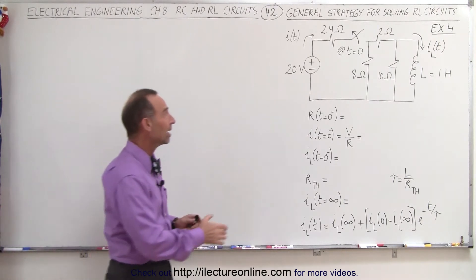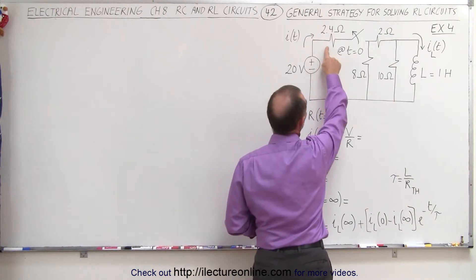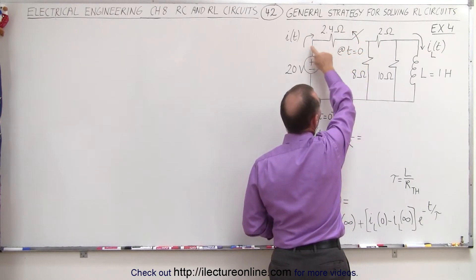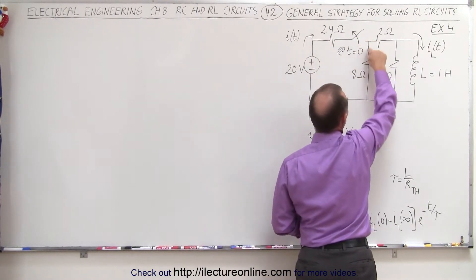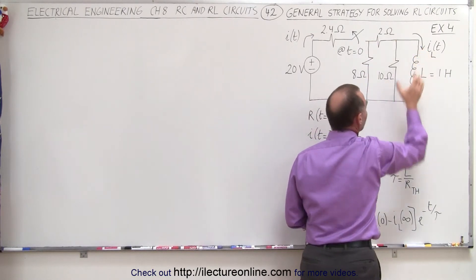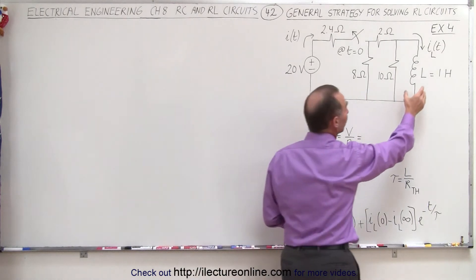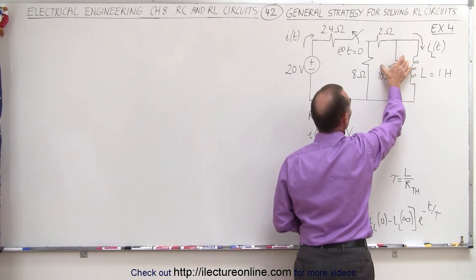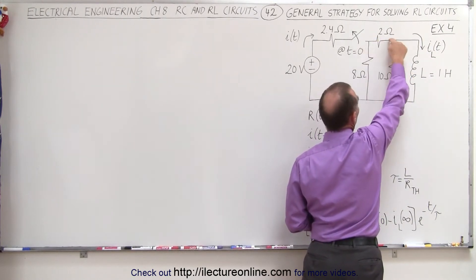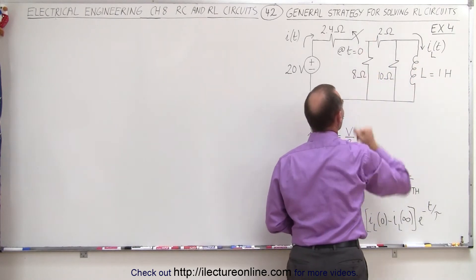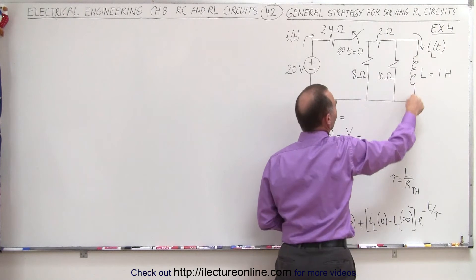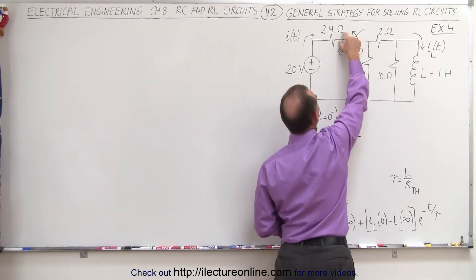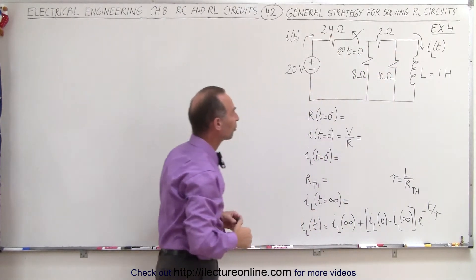This example looks a little bit different. We have a voltage supply, a 2.4 ohm resistor, and a switch which is initially closed and then opens at time equals zero. Before the switch opens, the current will go between the two branches. Since we have an inductor, once steady state is reached, the inductor offers no resistance — it's basically a short circuit. No current flows through the 10 ohm resistor; all current through the 2 ohm resistor also flows through the inductor, and the rest flows through the 8 ohm resistor. The two currents in these two branches combine to equal the total current through the 2.4 ohm resistor.